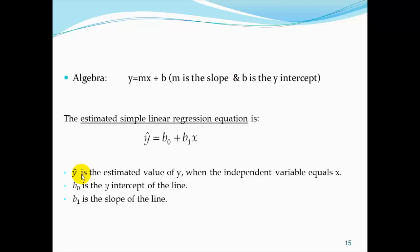Back in algebra, we learned that the equation for a line is y equals mx plus b, where m is our slope and b is the y-intercept. Here in this section, we will refer to this as our estimated simple linear regression equation: y-hat equals b0 plus b1x. b1 still represents the slope of our line and b0 represents the y-intercept. y-hat is the estimated value of y when the independent variable is equal to x.